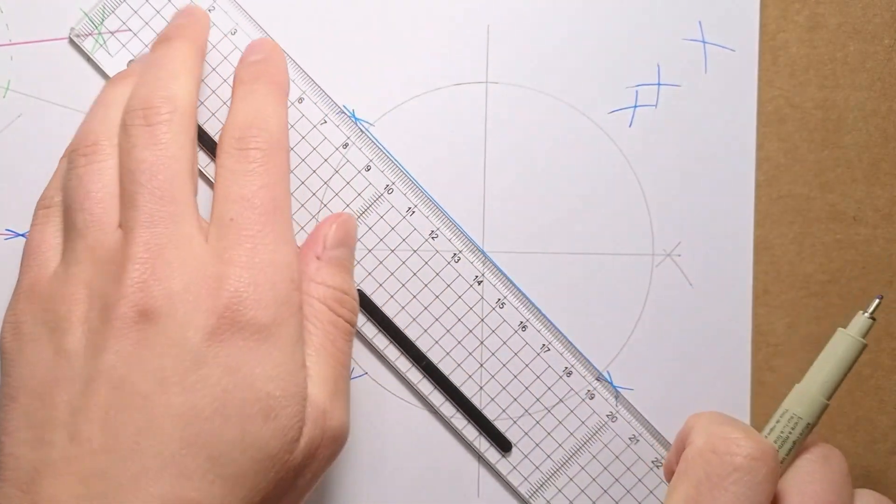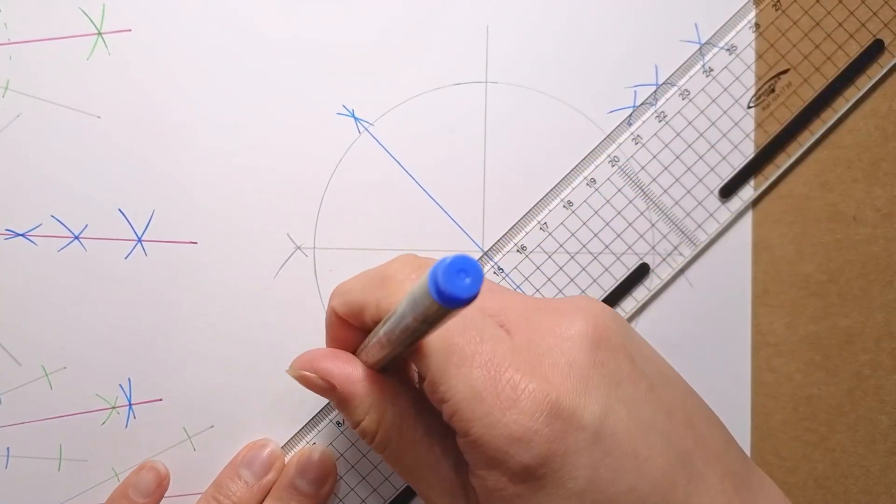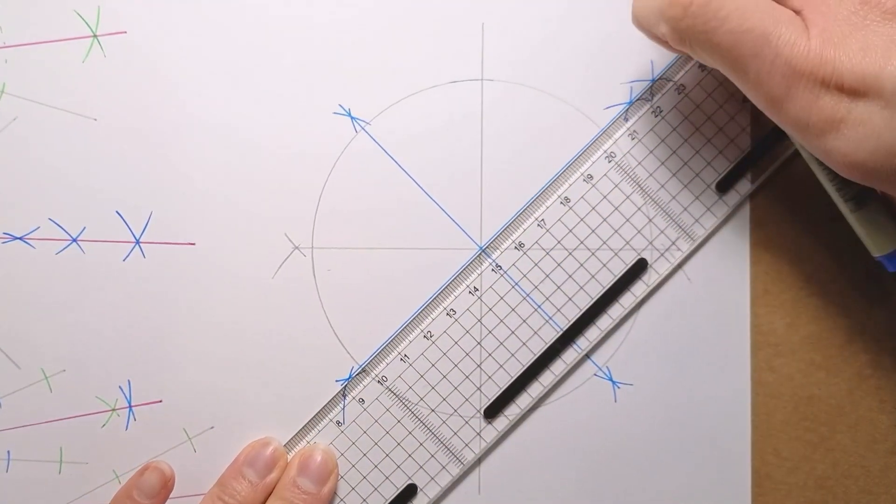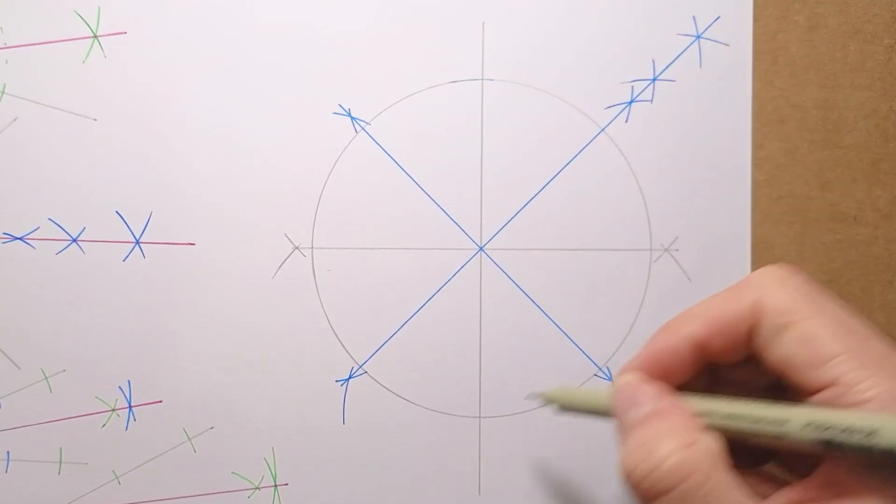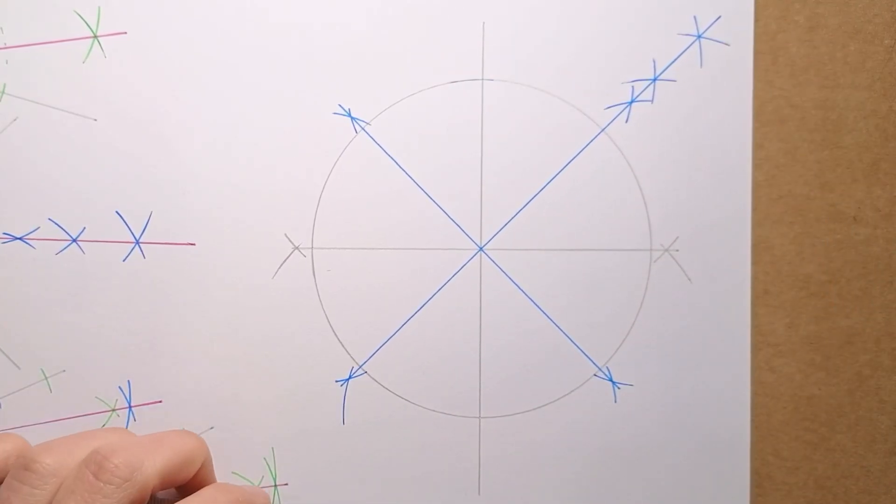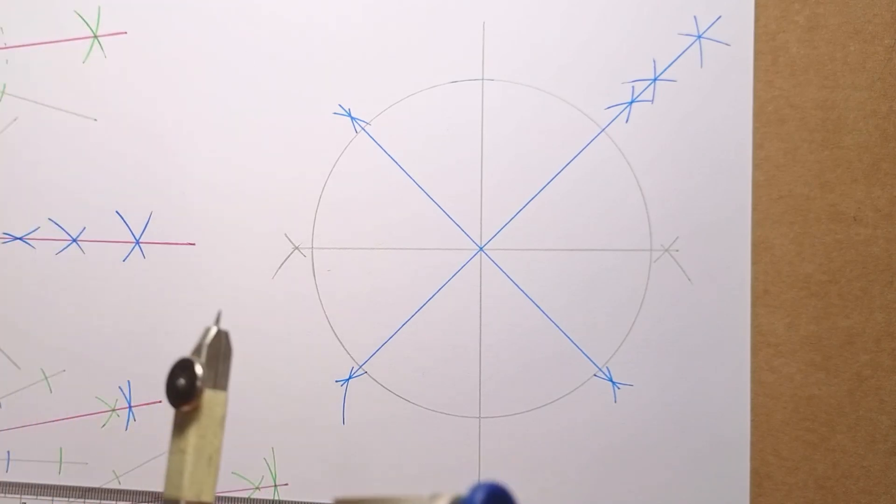And you go all around doing that. And that gives you a division in eight now. And so you can carry on doing that.